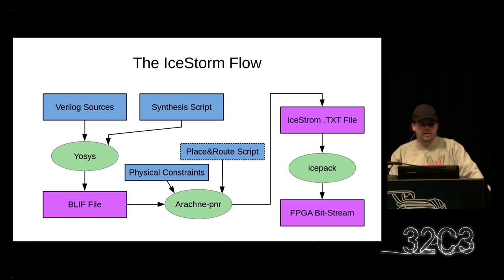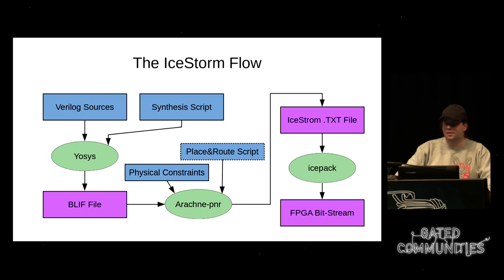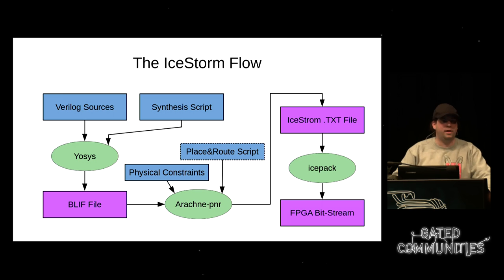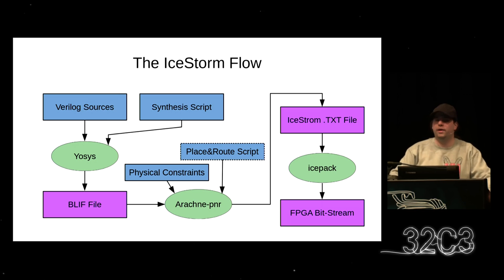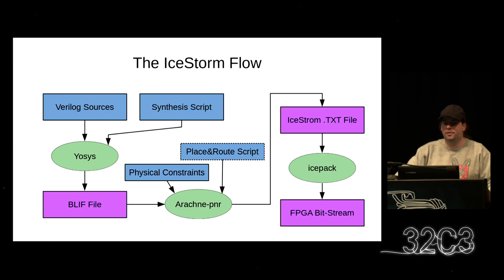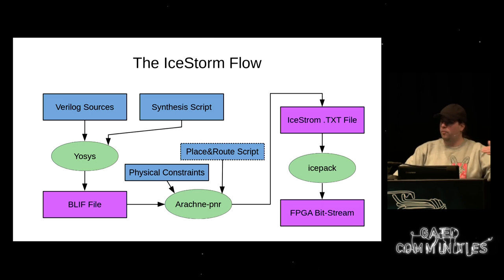We then take this BLIF netlist and pass it to Arachne-PNR, the place and route tool. We also give Arachne-PNR a physical constraints file specifying where each input or output pin should map on the device. Optionally you can specify a place-and-route script telling Arachne-PNR what strategy to follow and what internal passes to execute. The output is what I call an IceStorm text file — a very low level file format where for each individual tile you see a block of zeros and ones.